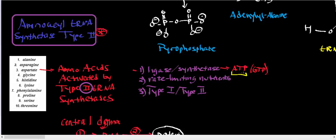All synthetases fall into a class of enzymes known as ligases — class six enzymes according to EC nomenclature. The next important point concerns the rate-limiting nutrients for this biosynthetic reaction of tRNA charging. One of them is adenosine triphosphate.